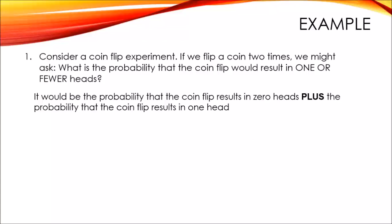So I have here an example. For our first example, consider a coin flip experiment. If we flip a coin two times, we might ask: what is the probability that the coin flip would result in one or fewer heads? Since the problem asks to compute the probability when our coin would have a result of one or no heads, it would be the probability of zero heads plus the probability of one head. That is the cumulative probability.